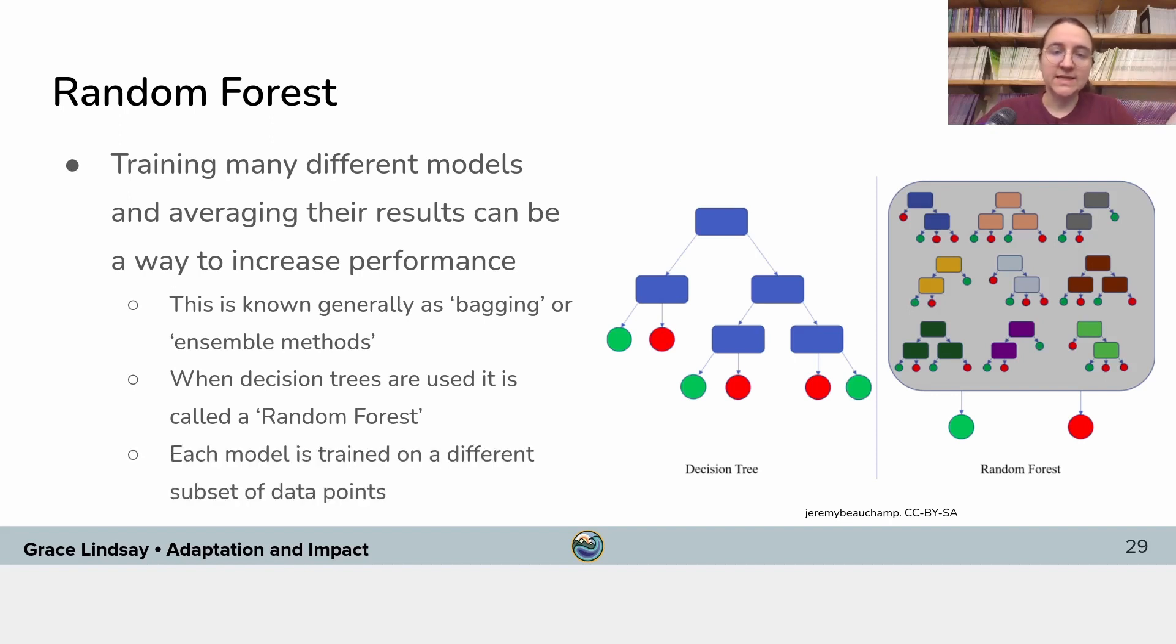And the randomness comes from the fact that each decision tree is trained on a slightly different subset of all of the data that you have. So you kind of break up your data into smaller parts, kind of randomly sample data points, and each tree is trained on a different random sample. And so each tree works a little bit differently and gives you a slightly different output. And when you average those all together, you can usually get better performance.